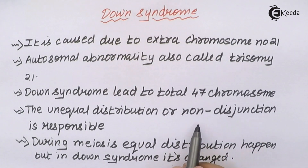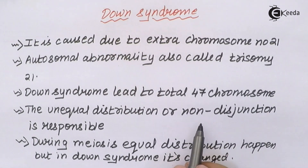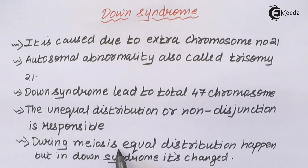This unequal distribution, especially when gametes are formed, or non-disjunction of sister chromatids, is responsible for this. During meiosis, equal distribution should always happen in the gametes. But in Down syndrome, there is an unequal distribution that leads to this disease.